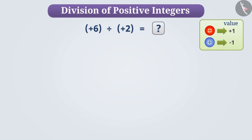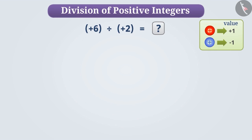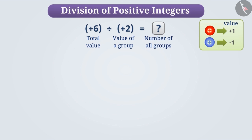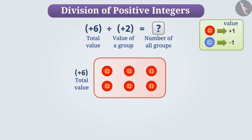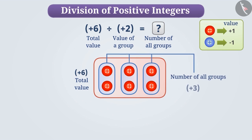Suppose we want to find out what will be the quotient of plus 6 divided by plus 2. We have to find how many groups of plus 2 will be there in plus 6. Let us find the quotient. If we keep six red buttons, their total value will be plus 6. If we make groups of two red buttons, we will get three such groups.